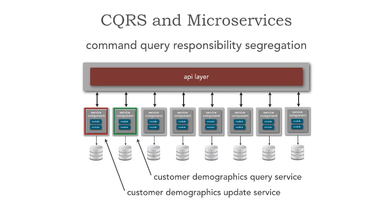Each service has its own model. Typically we get rid of the database on the query service. In the update service — the write service — we expose a cache of all of our data and replicate or distribute that cache to the query service. When an update occurs in the write service, we synchronize that cache through replication or distribution using tools like Apache Ignite, Gemfire, Coherence, HazelCast, or Memcached. Or it could be simple messaging, updating a map inside our query service.